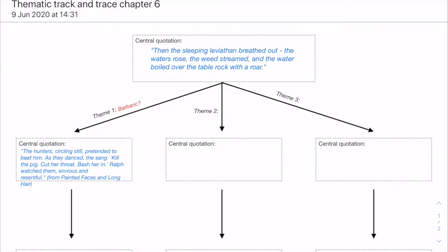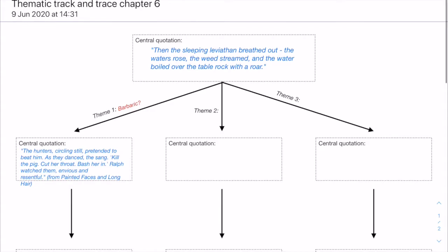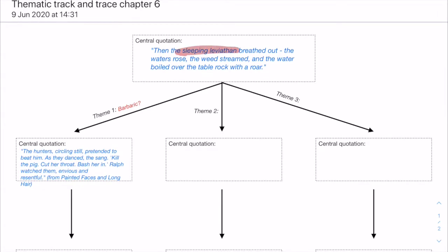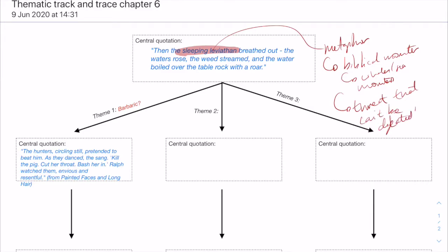We're moving into our track and trace activity and we're going to start with this one: 'Then the sleeping leviathan breathed out. The waters rose, the weeds streamed, and the water boiled over the table rock with a roar.' We're just going to start with this image of the sleeping leviathan, this metaphor used to define the ocean and the water and the island as a whole. The leviathan is a biblical monster that became later associated with the giant whales and sea monsters. That is a threat that can't be defeated by humans.